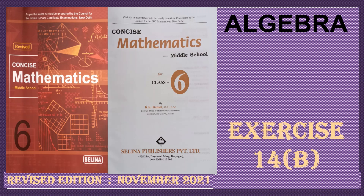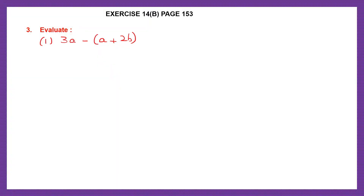Hello students, let's do algebra exercise 14b. 14b is found on page number 153. Question 3, first one, evaluate. If a term doesn't have a sign, we can give it a plus sign. Now let's begin.